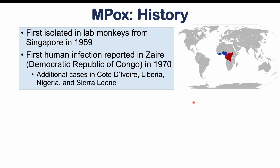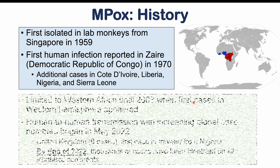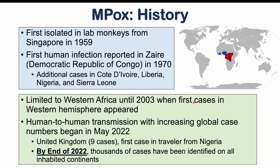This increase in cases may be due to the cessation of the smallpox vaccine, which is known to suppress or limit M-pox infection or lead to a milder form. Smallpox was eliminated in 1977, and afterwards the use of the smallpox vaccine declined, and we started seeing more M-pox cases. It remained limited to Western Africa until 2003, when the first cases appeared in the Western Hemisphere due to transportation of animals from Africa to the United States — though large human-to-human transmission was not yet seen.